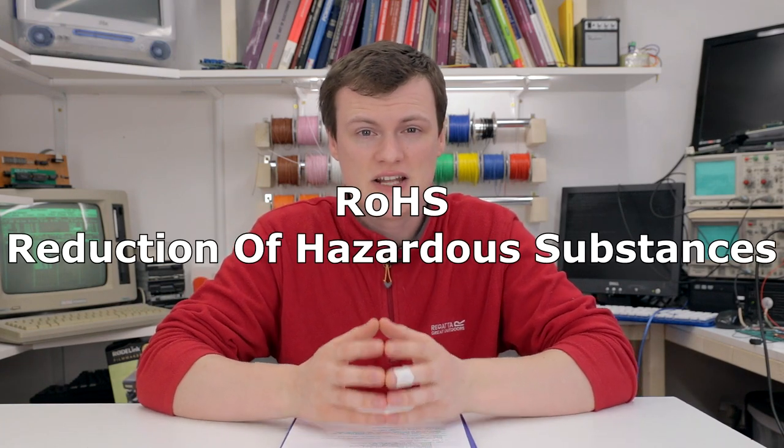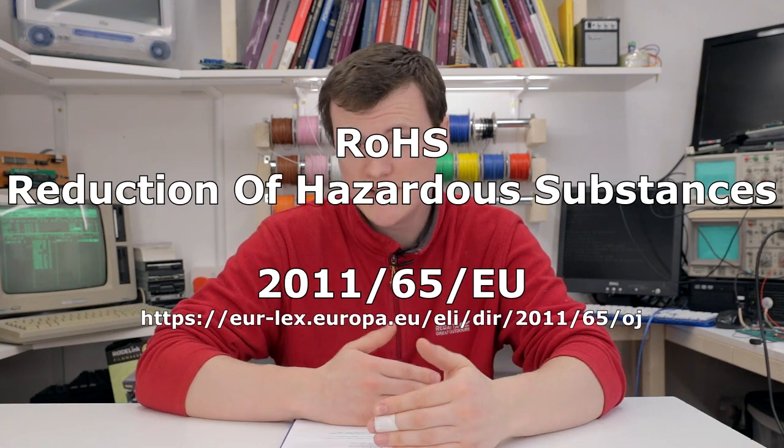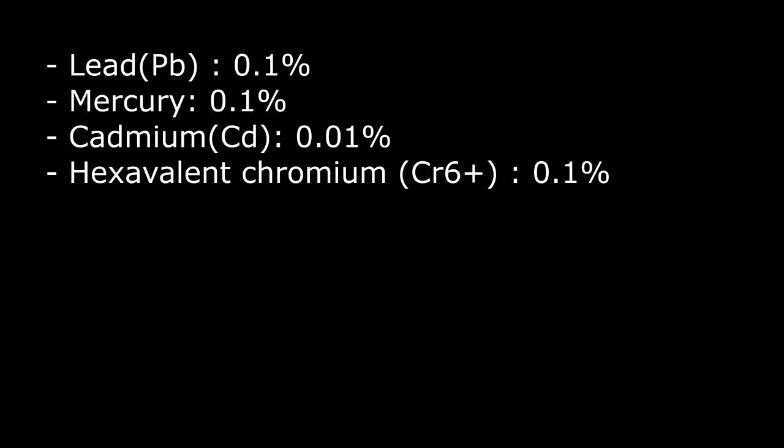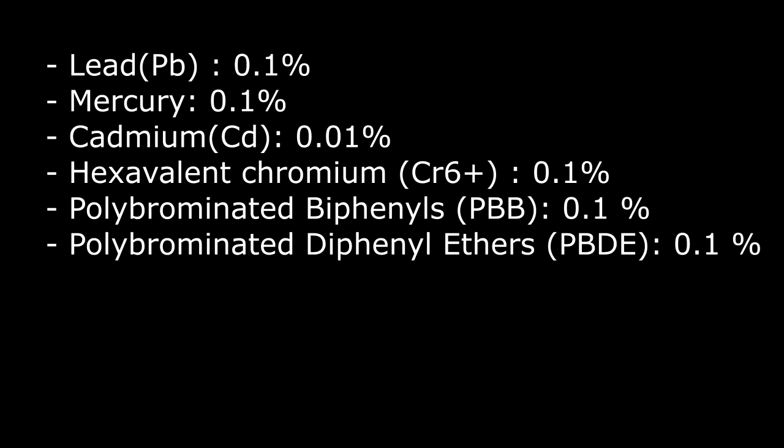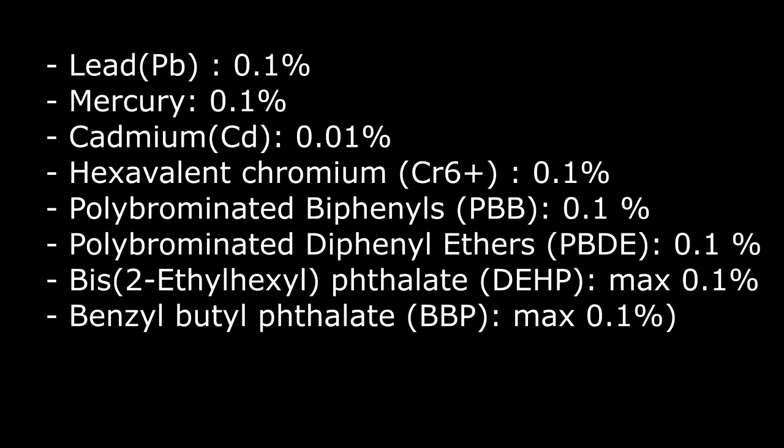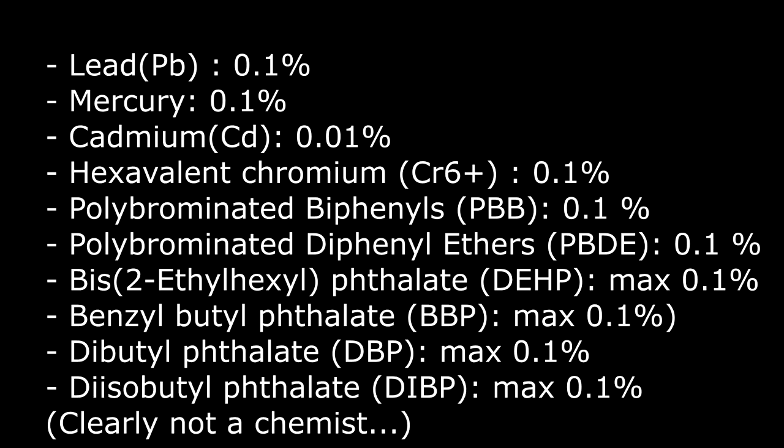So what is RoHS? You'll hear some people pronounce it as 'Rosh' — they're wrong. It's RoHS, R-O-H-S. RoHS stands for the Reduction of Hazardous Substances. It's an EU directive that essentially says you can't have certain chemicals in your products. The chemicals that you can't put in electronic products include lead, mercury, cadmium, hexavalent chromium, PBB, PBDE, DEHP, BBP, DBP, and DIBP.